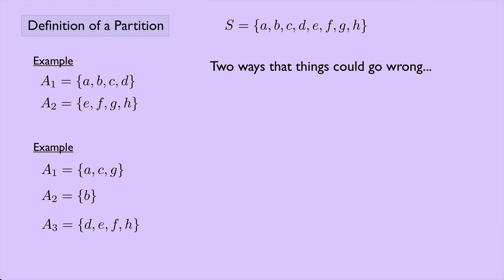So really, there's two ways that things could go wrong. We could have something like this. So this is not a partition. A1 is A, B, and C. A2 is E, F, G, and H. What's the problem here? Well, there's no D. And remember, if we take the union of the cells, it means to take them all together, we should get the set S. In this case, we wouldn't. We'd be missing D. So that's not a partition.